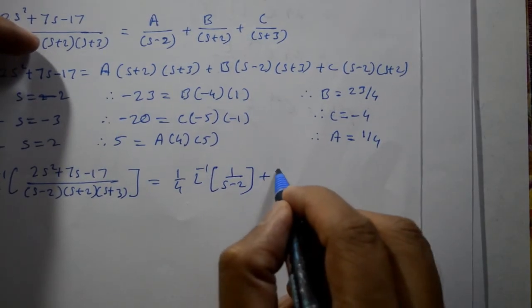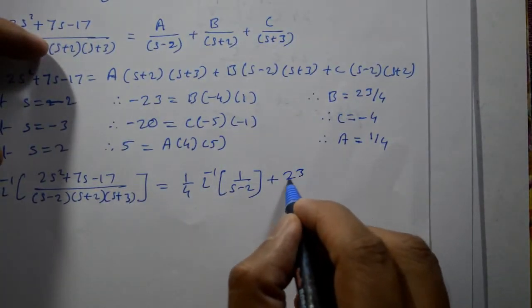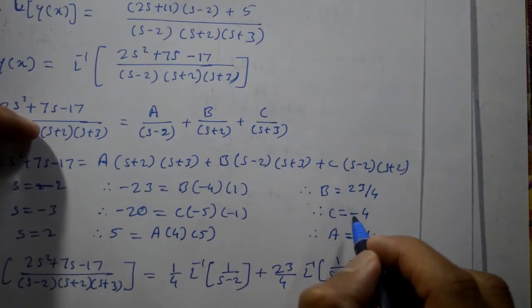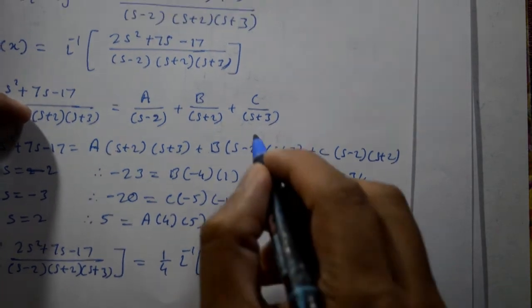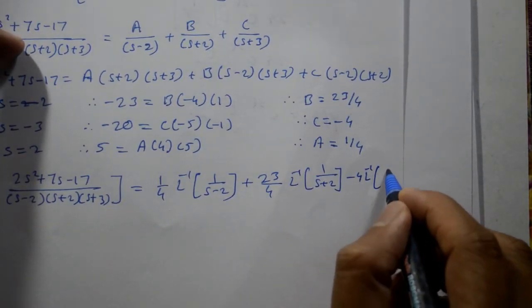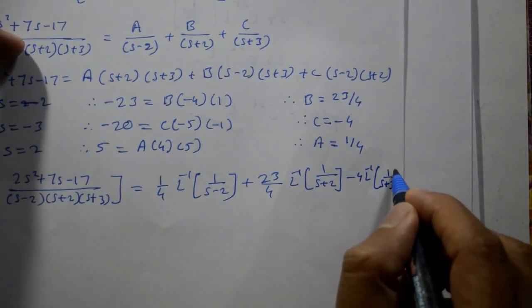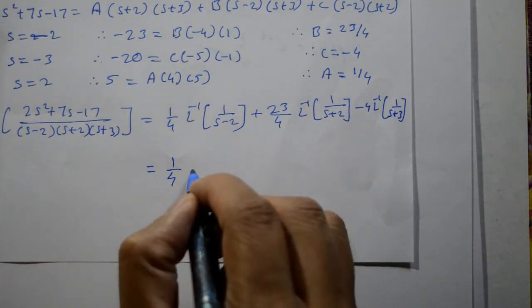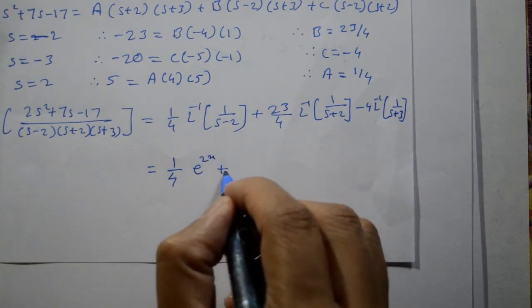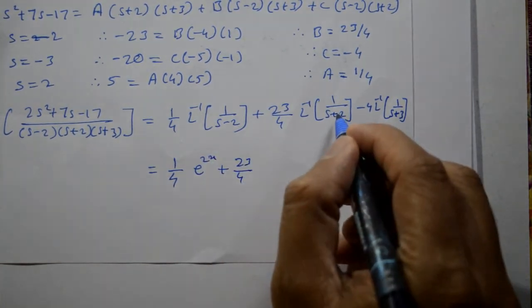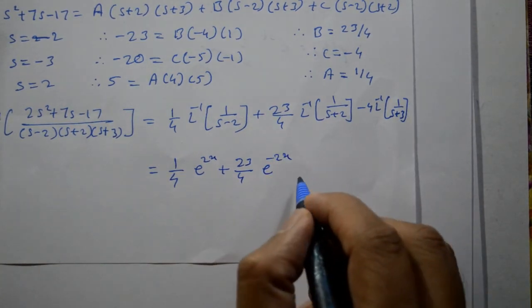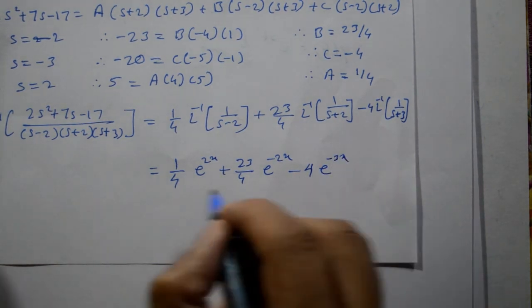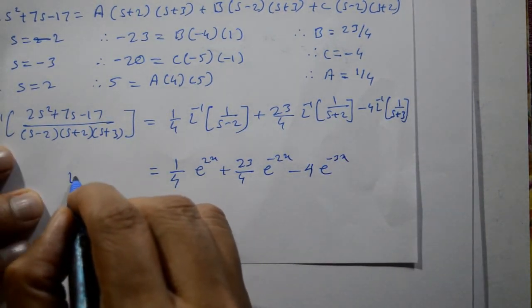b is 23 by 4, so substitute 23 by 4 inverse Laplace of 1 by s plus 2. c is minus 4, so minus 4 inverse of 1 by s plus 3. This is equal to 1 by 4 using standard function e raise to 2x plus 23 by 4 e raise to minus 2x minus 4 into e raise to minus 3x. So y of x is equal to this right hand side. This is required solution.